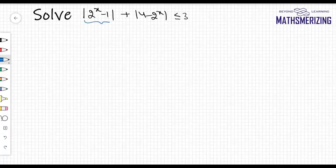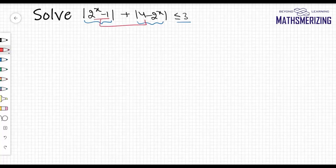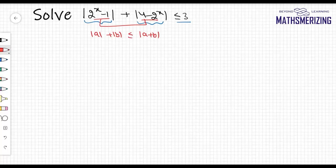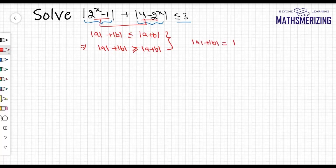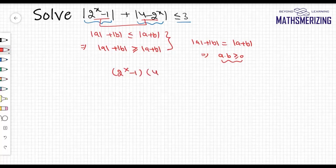Next question: |2^x - 1| + |4 - 2^x| < 3. Adding (2^x - 1) and (4 - 2^x) gives 3, which is the right-hand side. Writing a = 2^x - 1 and b = 4 - 2^x, we need |a| + |b| < |a + b|. But |a| + |b| ≥ |a + b| always, so both conditions hold simultaneously only when |a| + |b| = |a + b|, requiring a·b ≥ 0. So (2^x - 1)(4 - 2^x) ≥ 0, giving roots x = 0 and x = 2.